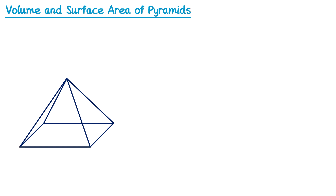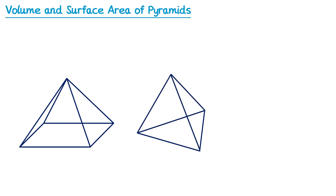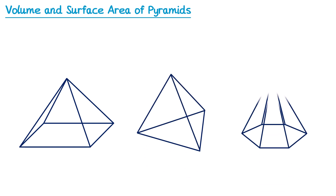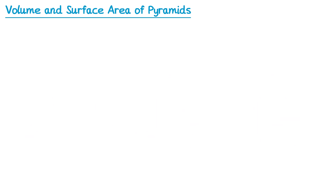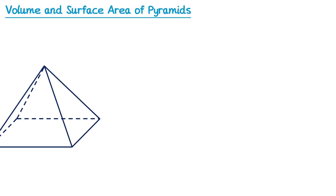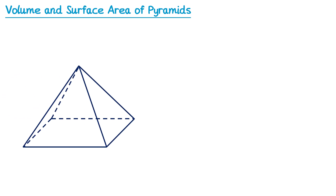It doesn't matter what shape the base is as long as it's a polygon, so it could be a triangle like this, or even a hexagon like this. All of these are examples of pyramids. In your exam you'll almost certainly come across a square-based pyramid, and in this video we're going to learn how to find the volume and surface area of one.